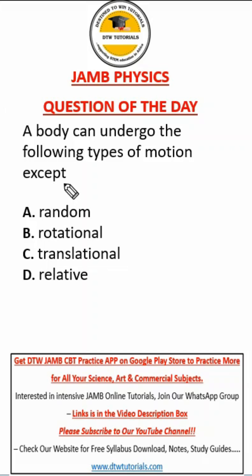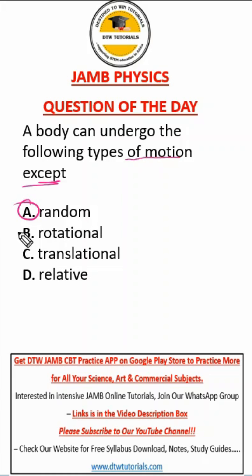Let's look at this JAMB question. It says: 'A body can undergo the following types of motion, except...' You can quickly fail this question by picking randomly. JAMB questions can be simple but very confusing.